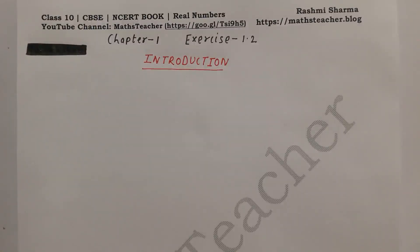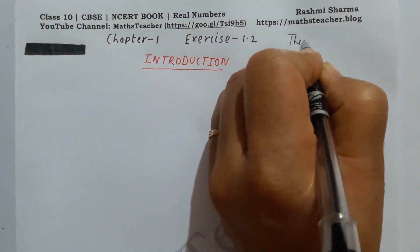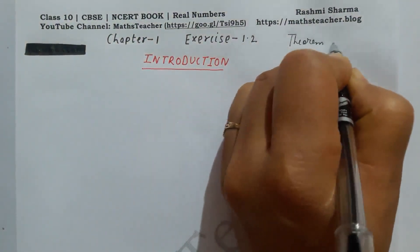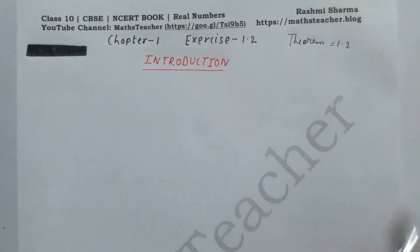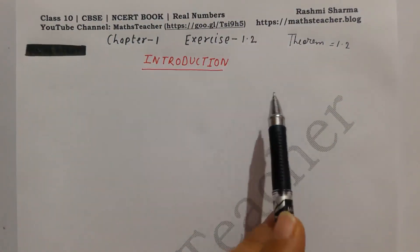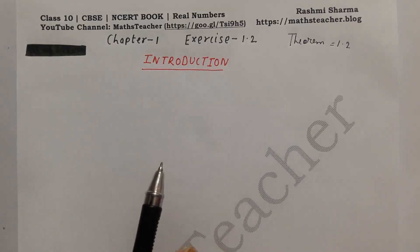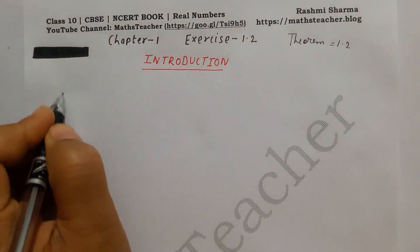Hello viewers, welcome to my channel. Now we will solve Chapter 1, Exercise 1.2, from Theorem 1.2. I will explain Theorem 1.2, which is the Fundamental Theorem of Arithmetic. First, we will see what is a prime number and a composite number, because this theorem is built from these numbers.